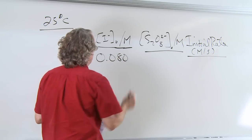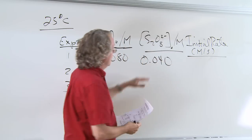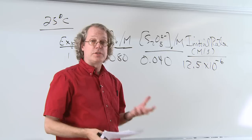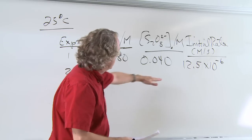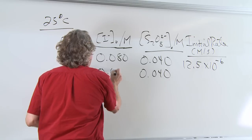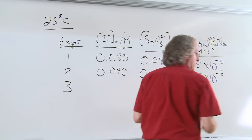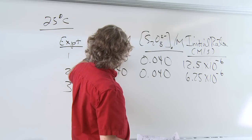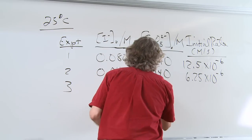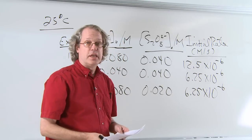In experiment one, we start with 0.08 molar iodide ions and 0.04 molar peroxydisulfate, and we measure an initial rate of 12.5 × 10⁻⁶ molar per second. In experiment two, we hold the peroxydisulfate concentration the same but decrease the iodide concentration by half, and the initial rate is 6.25 × 10⁻⁶. In experiment three, we keep iodide the same as experiment one but halve the peroxydisulfate concentration, and we find an initial rate of 6.25 × 10⁻⁶.